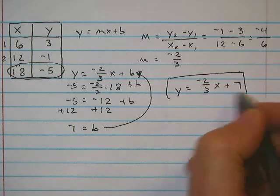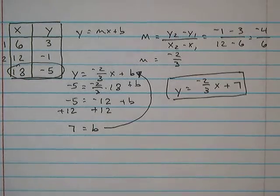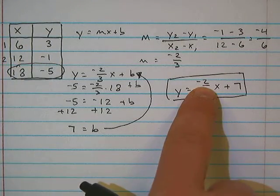This goes back in. So y is equal to negative 2 thirds x plus 7. There's our equation for that one.